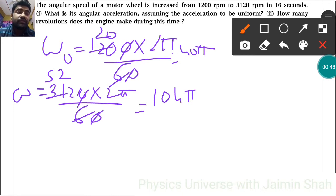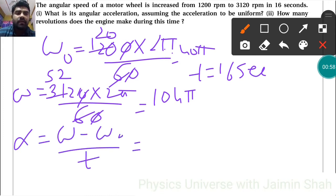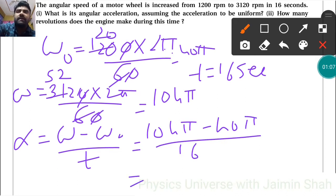This occurs in 16 seconds, so t = 16 seconds. What is the angular acceleration? The formula is α = (ωf - ωi)/t = (104π - 40π)/16 = 64/16 = 4π. So α = 4π.